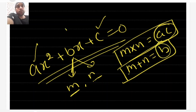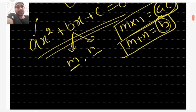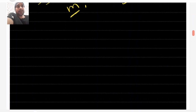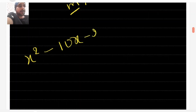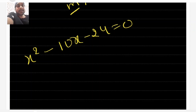You must have learned this method in your previous class, that is class 9. So let us see one example: x² - 10x - 24 = 0. Let's see how to solve it.